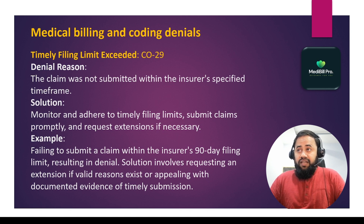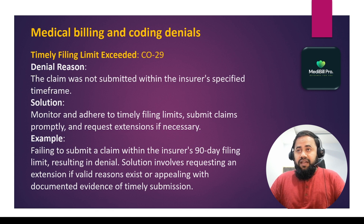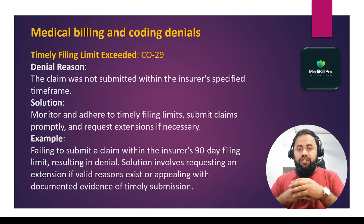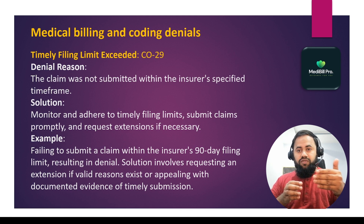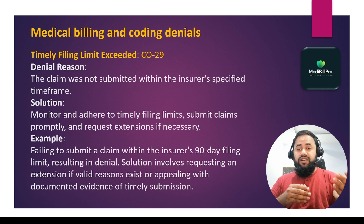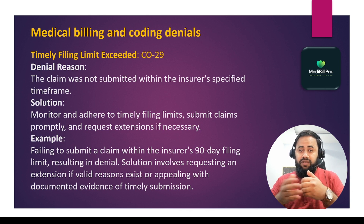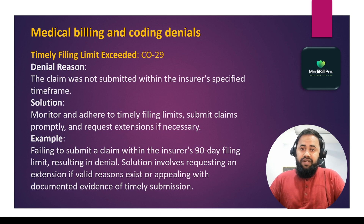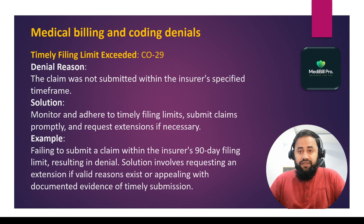The solution is to monitor and adhere to timely filing limits — submit claims promptly within the insurance's timeframe and request an extension if necessary. Sometimes delays happen due to incorrect primary or secondary insurance information. You need to get the correct insurance information and resubmit the claim. For example, failing to submit a claim within the insurer's 90-day filing limit results in a denial. The solution involves requesting an extension if valid reasons exist, or appealing with documented evidence of timely submission.